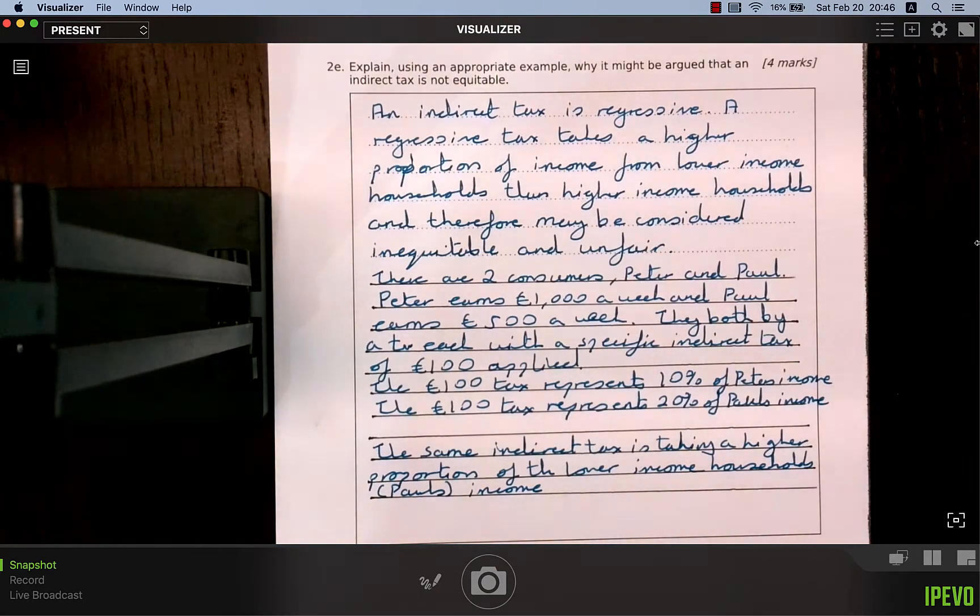There are two consumers, Peter and Paul. Peter earns $1,000 a week, and Paul earns $500 a week. They both buy a TV each with a specific indirect tax of $100 applied. That €100 tax represents 10% of Peter's weekly income, whereas that €100 tax represents 20% of Paul's weekly income. It's taking a higher proportion of income away from Paul than it is of Peter, because Paul earns less than Peter. That's not fair. The same indirect tax is taking a higher proportion of the lower income households' income. That's the end of this video on indirect taxation. I really hope that helped. Thank you so much for watching.